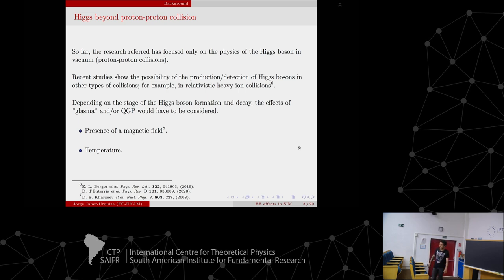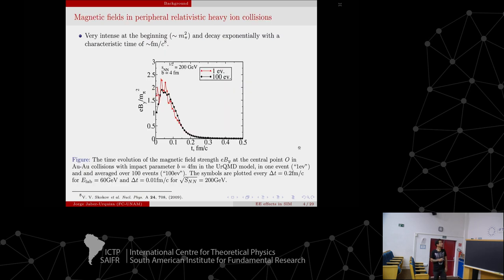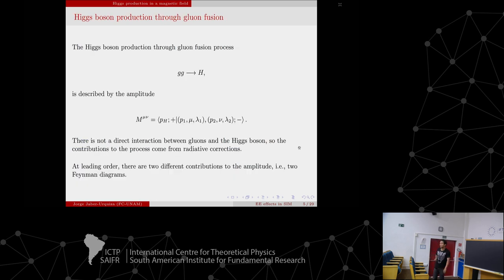Basically, in this talk I will discuss how the presence of electromagnetic fields in this type of collision affects how gluons interact to create a Higgs boson. For completeness, this is the profile we get in this type of collision: a very intense magnetic field, sharp magnetic field intensities at the beginning, and then decay. The process we are analyzing is two gluons in the initial state producing a Higgs boson as a final state.